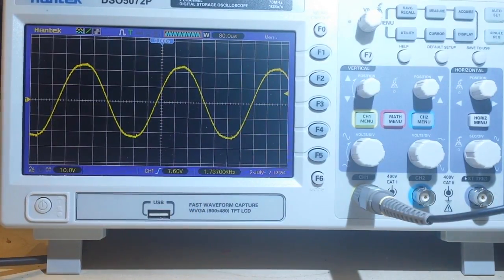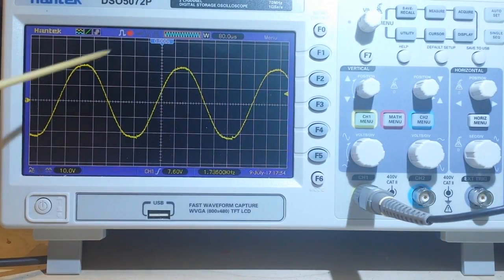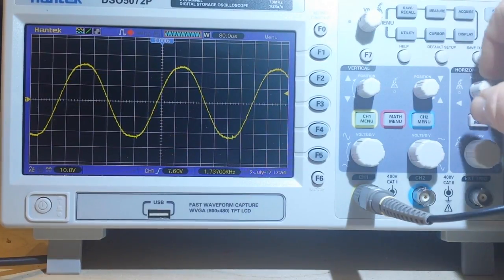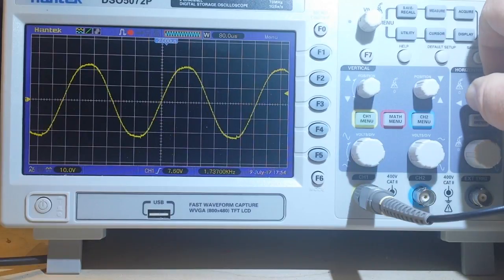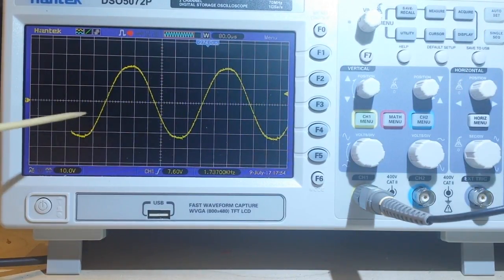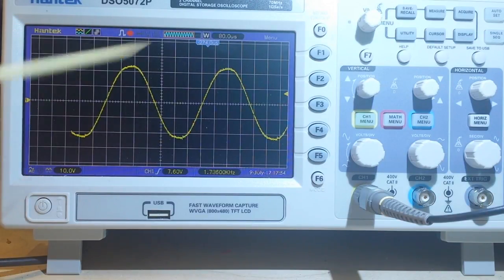And in fact if I press the run stop button on the scope, and you see now we're stopped, a little red dot there, we're not triggering. And I move the horizontal position knob, we are seeing more of the pre-trigger and you can see it's 274 microseconds.